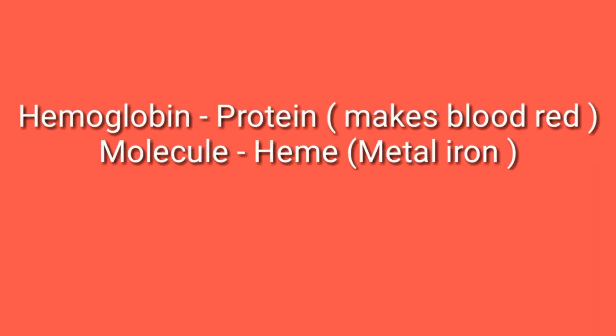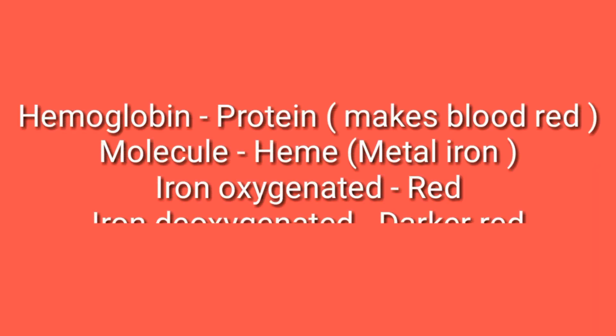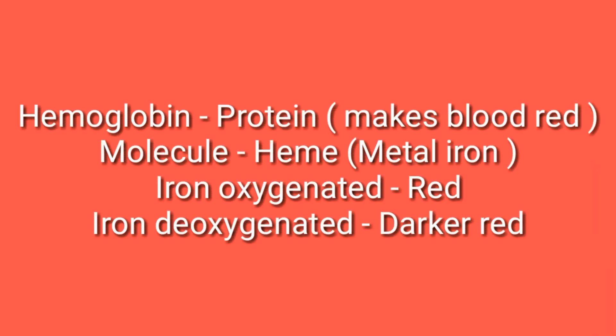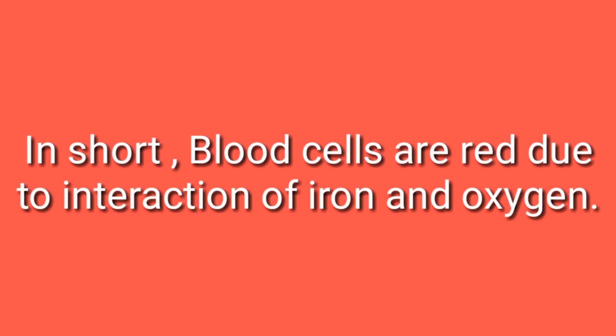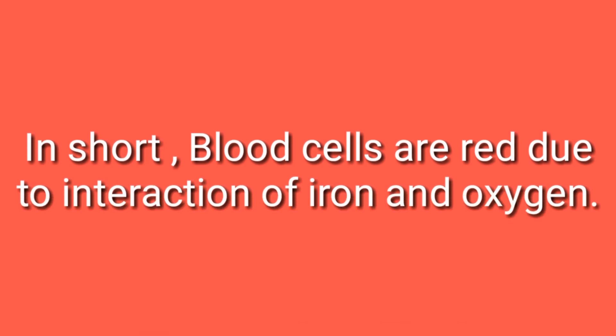Hemoglobin is the protein that makes blood red. It has a molecule called heme, and the metal iron is present in it. When the iron is oxygenated, it becomes red. When the iron is deoxygenated, it becomes darker red. In short, the blood cells are red due to the interaction of iron and oxygen.